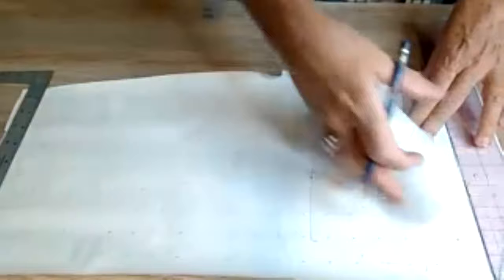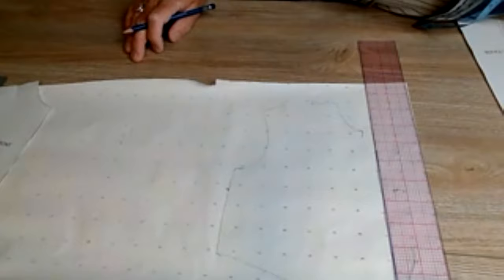I'm just going to mark off my right angles because we know that center front is a straight line. Then I am going to trace along the top right here from the center of the shoulder that we marked over to the corner.